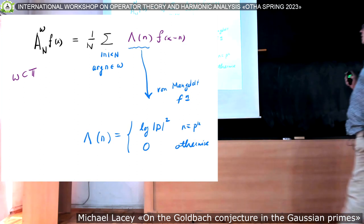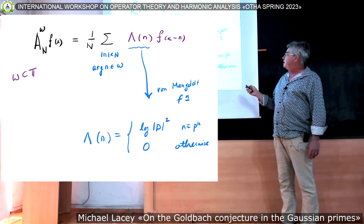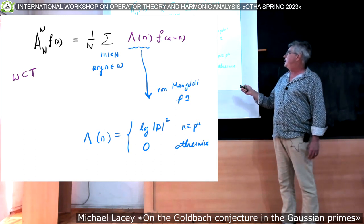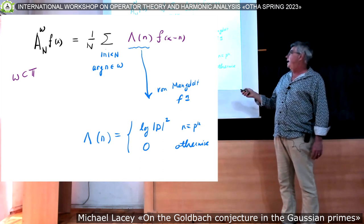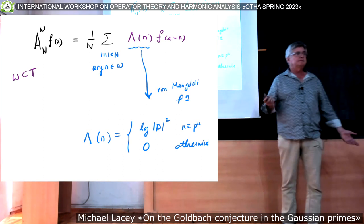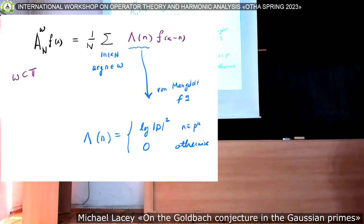And it's the von Mangoldt function. The von Mangoldt function is, if n is a power of an integer, it's log p squared. And otherwise it's zero. It's the standard method. Vinogradov didn't use von Mangoldt, but he easily could have.